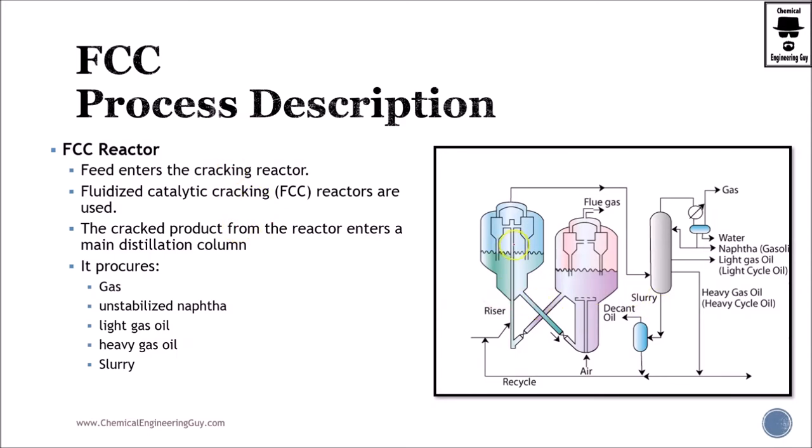Now let's continue. We have FCC reactor, which is this one right here. The feed enters. So we got our feed, which will be typically the vacuum gas oil or the vacuum residue goes here. A mixture of that will go here. The recycle of several products such as the slurry, which is here, and the heavy gas oils are recycled. Now we get this to the riser and starts going through this part right here.